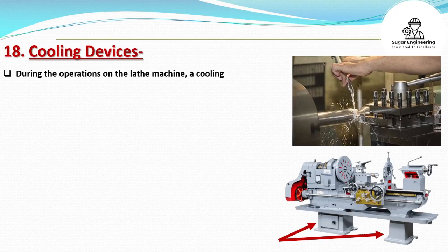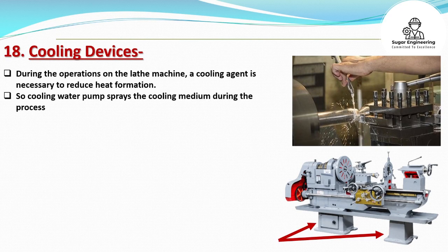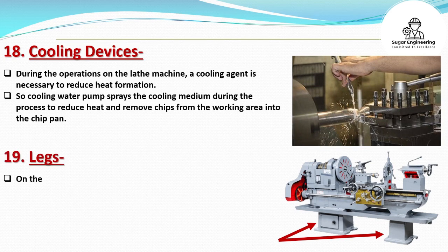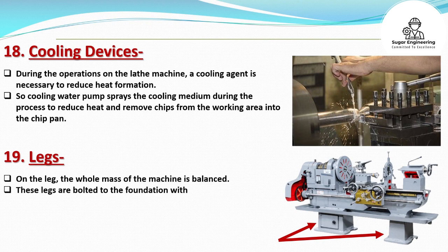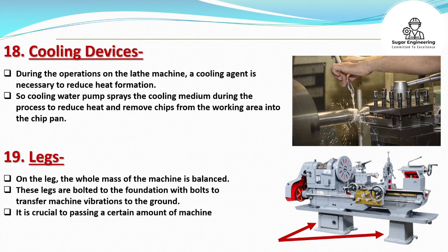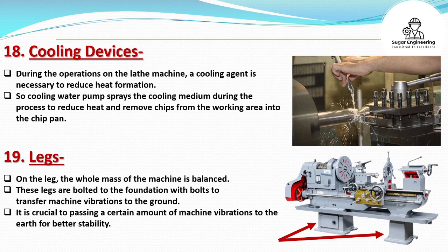During the operations on the lathe machine, a cooling agent is necessary to reduce heat formation. A cooling water pump sprays the cooling medium during the process to reduce heat and remove chips from the working area into the chip pan. The legs support the whole mass of the machine in a balanced manner. These legs are bolted to the foundation with bolts to transfer machine vibrations to the ground. It is crucial to pass a certain amount of machine vibrations to the earth for better stability.